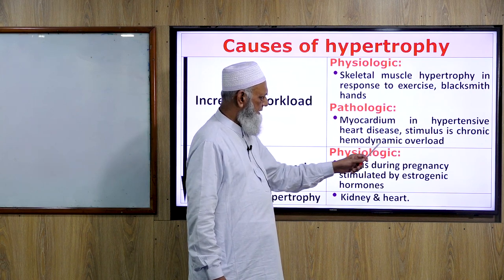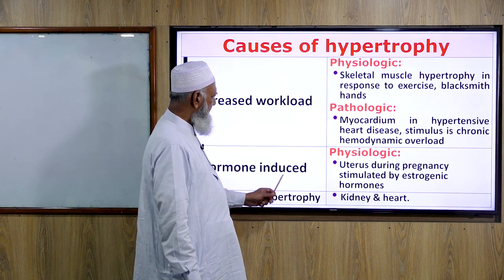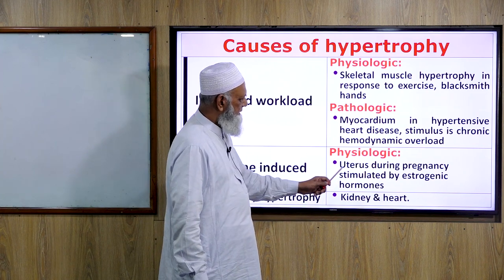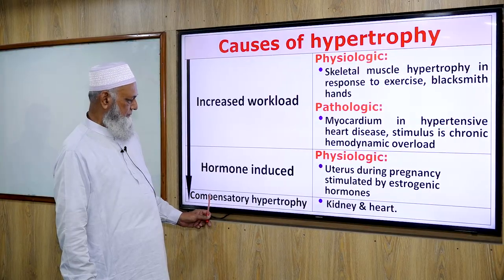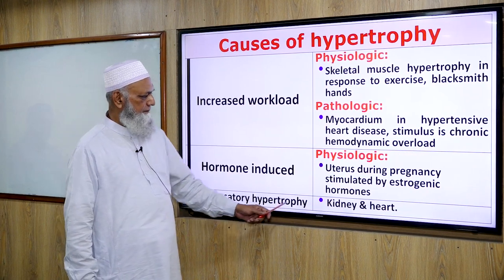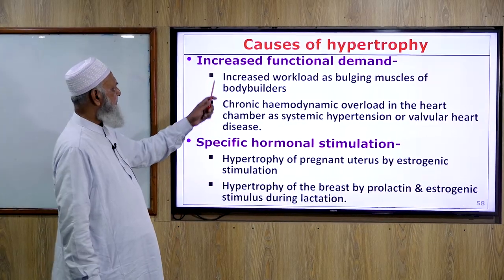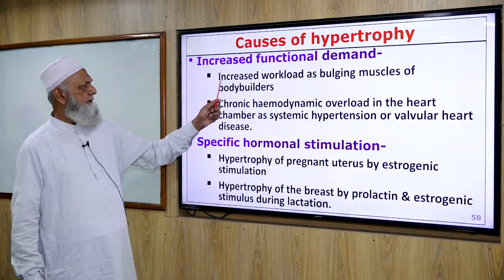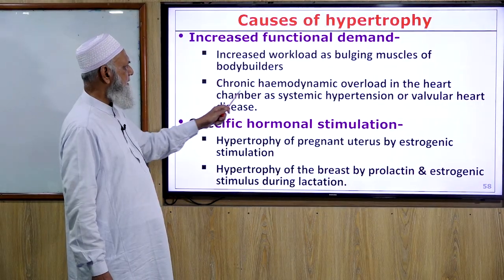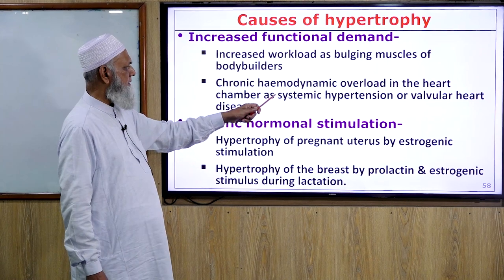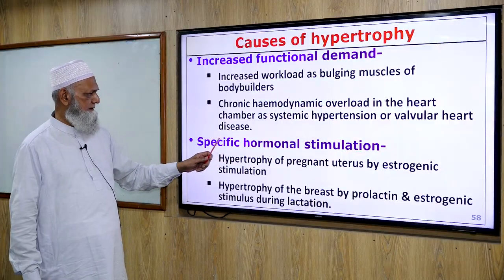Hormone-induced hypertrophy: physiological example is the uterus during pregnancy, stimulated by estrogenic hormones. Compensatory hypertrophy occurs in the kidney and heart. Causes include increased functional demand and increased workload, such as bulging muscles of bodybuilders, and chronic hemodynamic overload in heart chambers due to systemic hypertension or valvular heart disease.